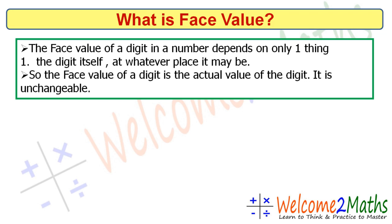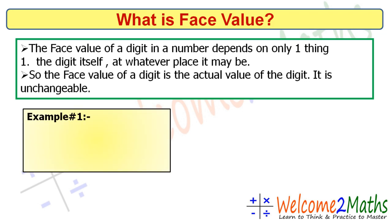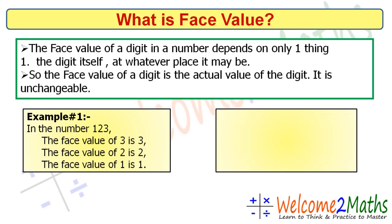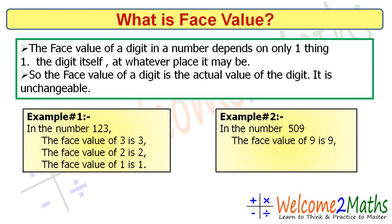Now let's see some examples of face value. Here is the number 123. The face value of 3 is 3, the face value of 2 is 2, and the face value of 1 is 1. Now here is the number 509. The face value of 9 is 9, the face value of 0 is 0, and the face value of 5 is 5.